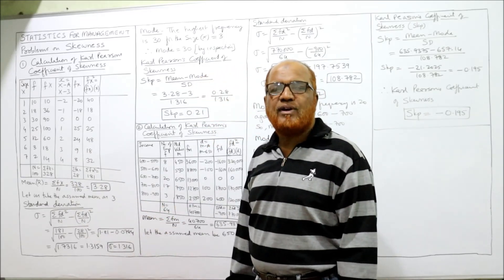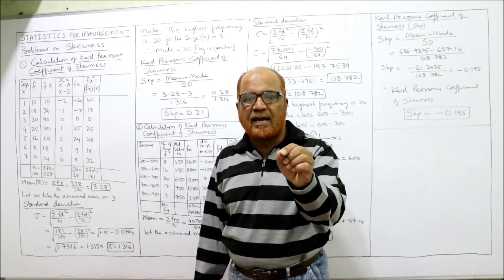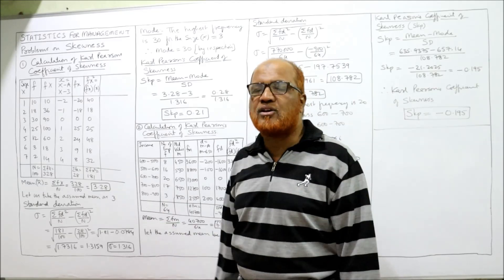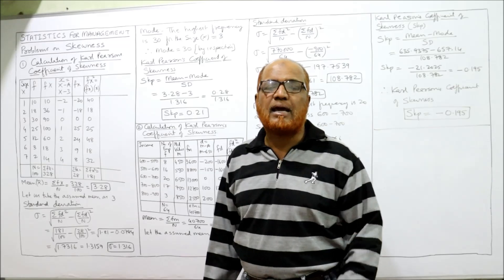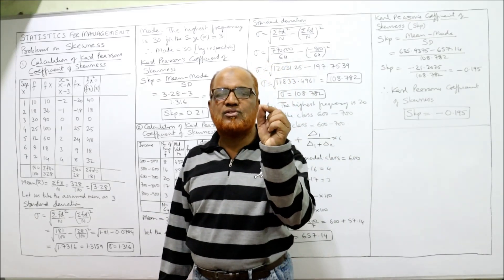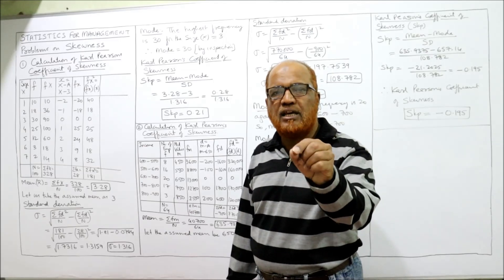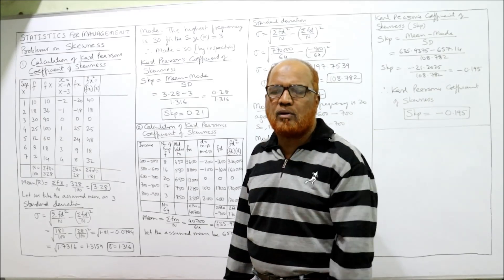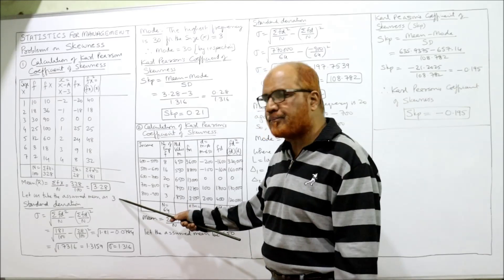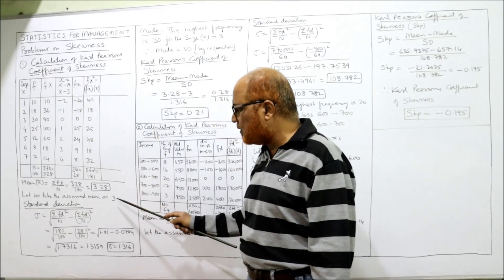Since the mean is a fraction (3.28), it is suggested to take an assumed mean to calculate deviations for the standard deviation. Calculating deviations directly from a fractional mean would be tedious and time-consuming. So instead, we take an assumed mean close to the actual mean. I have taken assumed mean A = 3. The only condition is that the assumed mean should be near the actual mean.